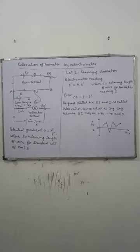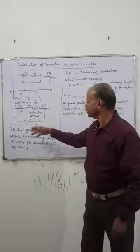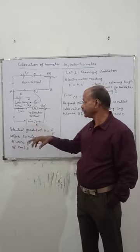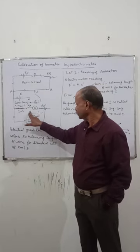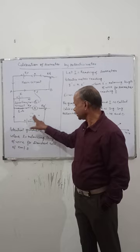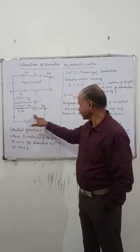Calibration of ammeter by potentiometer. This is the circuit diagram. This is the ammeter which is to be calibrated. This is the ammeter circuit.